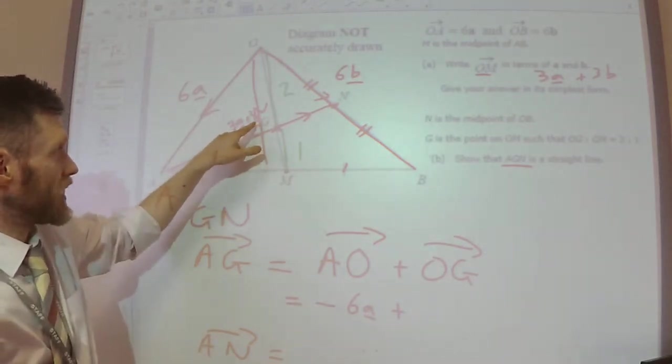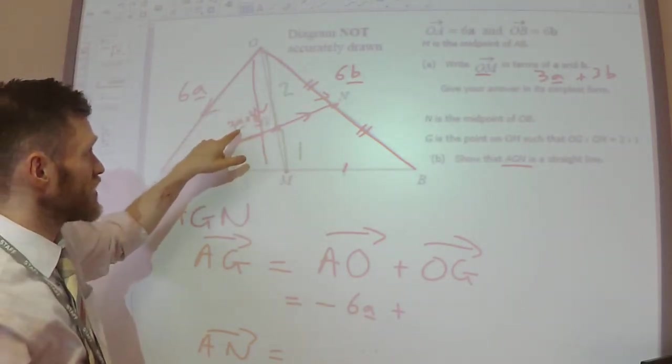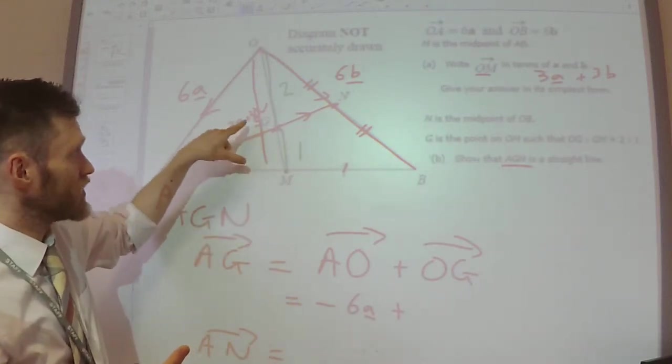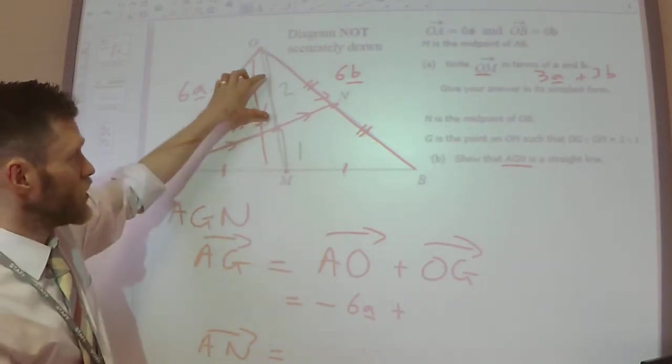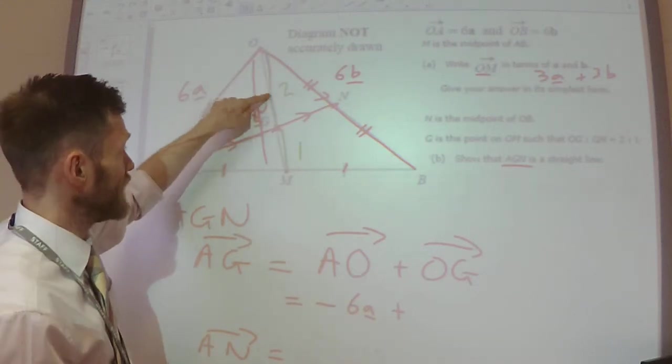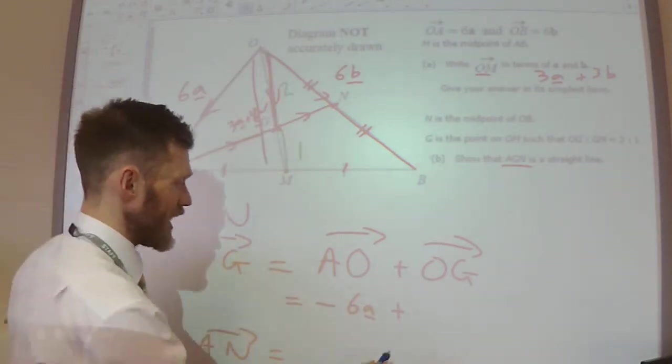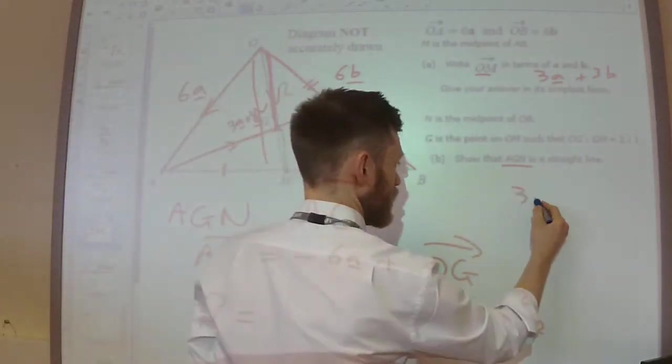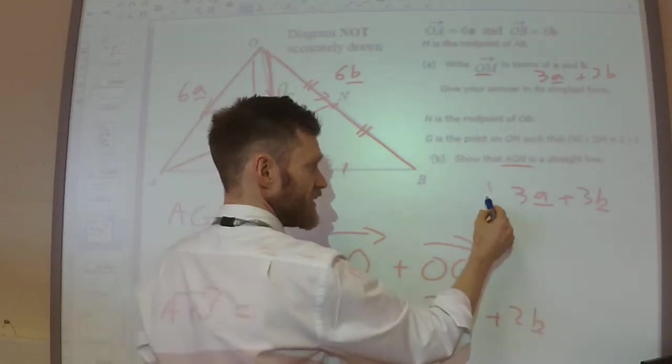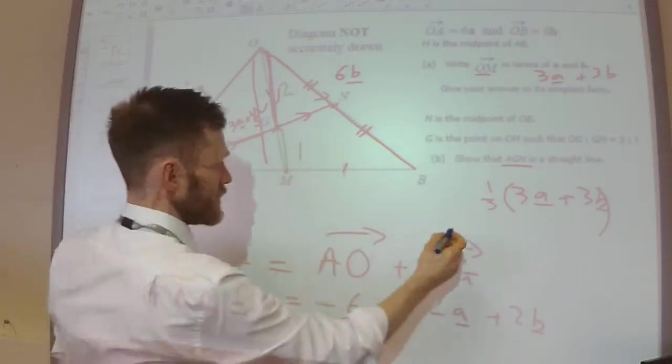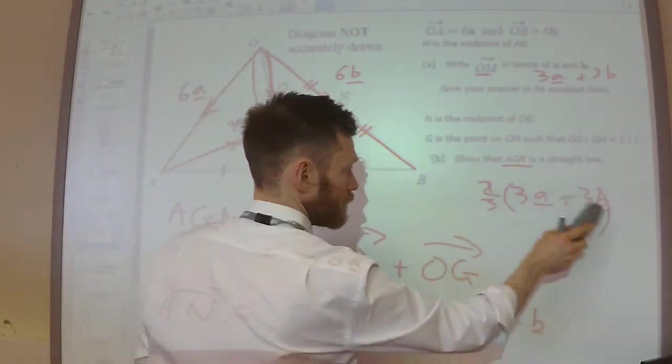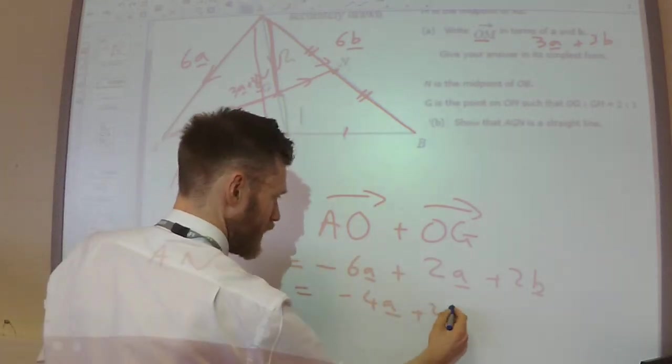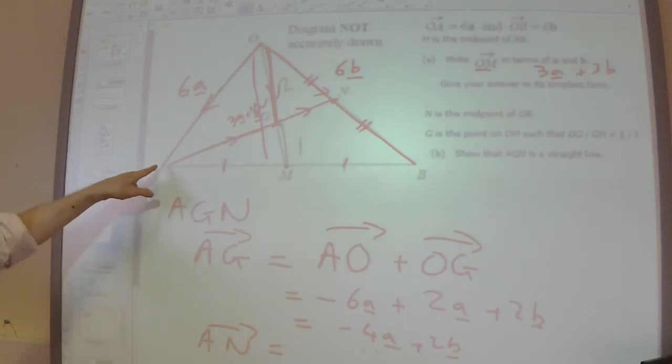This O to M was 3a plus 3b. So if I split this 3a plus 3b in the ratio of 2 to 1, one part of it would be a plus b. So two parts of it would be 2a plus 2b. So from here to here, that is just 2a plus 2b. I've just split that 3a plus 3b. And all I've done is I've divided that by 3, because I've got 3 parts here, and then times it by 2. And that gives me my 2a plus 2b. Simplify that a little bit and we get minus 4a plus 2b. So that is the vector from A to G.